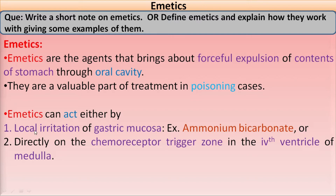The first mechanism is by local irritation of the gastric mucosa — these emetics will irritate the gastric mucosal membrane locally. An example is ammonium bicarbonate. The second mechanism is that they act directly on the chemoreceptor trigger zone (CTZ) located in the fourth ventricle of the medulla. Some drugs stimulate this CTZ and produce an emetic effect; some organic drugs stimulate this zone, which will be discussed in medicinal chemistry.